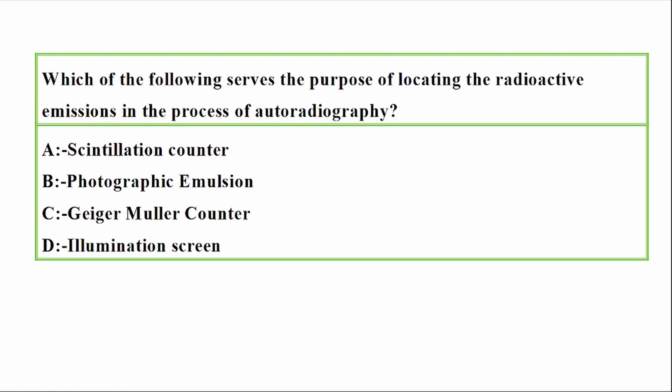Question: Which of the following serves the purpose of locating radioactive emissions in the process of autoradiography? Options: A — Scintillation counter, B — Photographic emulsion, C — Geiger counter, D — Elimination screen. Correct answer: Option B — Photographic emulsion. If you have any questions, feel free to ask.